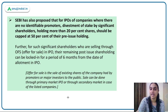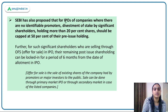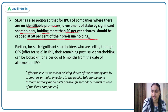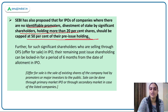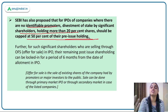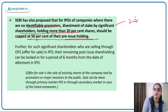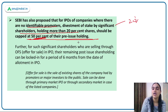The second proposal: for IPOs of companies where there are no identifiable promoters, divestment of stake by significant shareholders — those with more than 20% stake — should be capped at 50% of the pre-issue holding. So if they need to divest their shares, their divestment will be capped at 50% of the pre-issue holding.